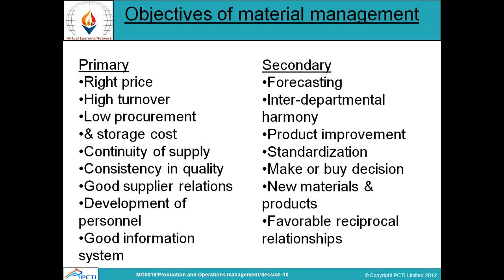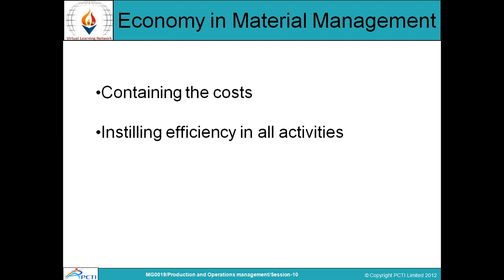Apart from primary objectives, there are secondary objectives such as forecasting and inter-departmental harmony. Secondary objectives include improving product standardization, helping with make-or-buy decisions, assessing reciprocal relationships, and achieving economy in material management — which involves containing costs and installing efficiency in all activities so that acquiring materials costs less and all activities are performed efficiently.